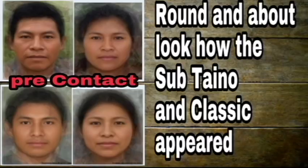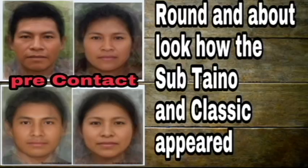This is a rough estimate of how the sub-Taino and classic Taino appeared. This phenotype represents Arawak groups, taken directly from humanphenotypes.net. It describes a Native American type of the tropical lowland forests of South America, developed in the Guyana savannas from a proto-Mongoloid stock that migrated south coming from the Bering Strait. This type later expanded all over Amazonia, the Amazon basin of Brazil, and the Caribbean, where it was the dominant type during pre-Columbian periods.